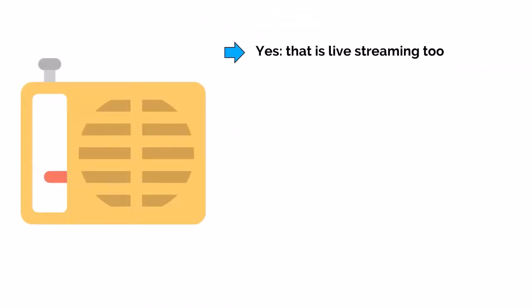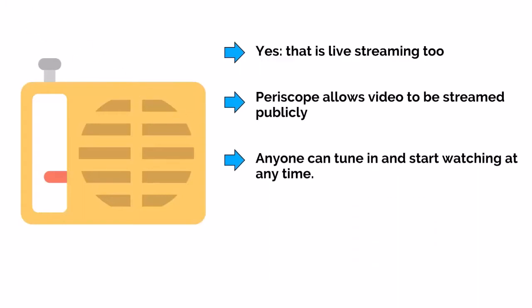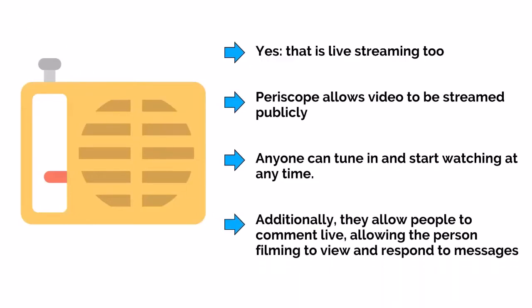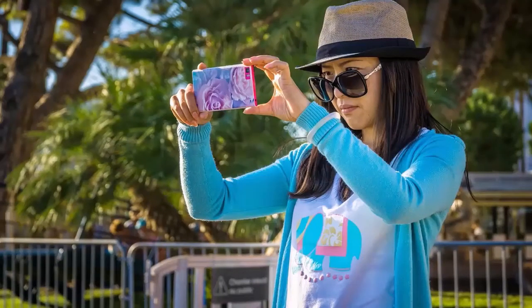What's different about Periscope is that it allows video to be streamed publicly, meaning anyone can tune in and start watching at any time. Additionally, they allow people to comment live, allowing the person filming to view and respond to the messages. Live streaming is a little like having your own television channel, except you only need a phone with one of the live streaming apps, such as Periscope, installed.